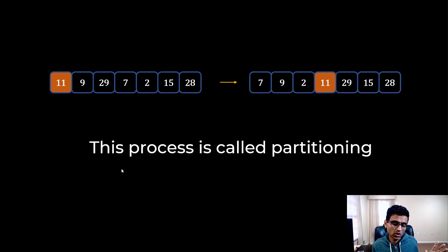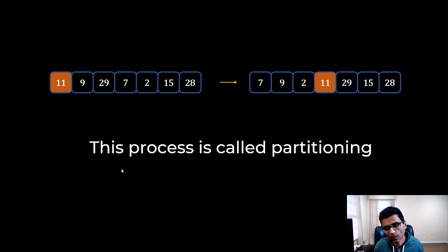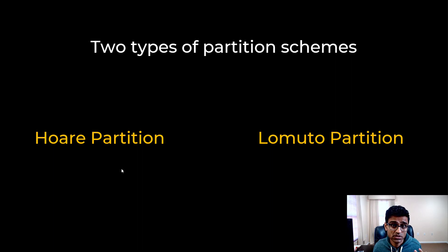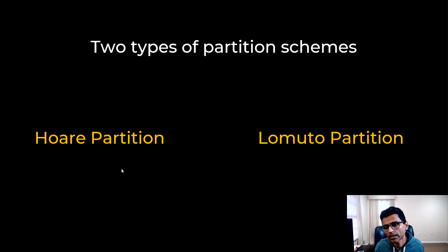Going back to how we can put a pivot in its right position — this process is called partitioning. When you put an element in its right position, you essentially create two partitions: left and right. There are two famous partitioning schemes: Hoare partition and Lomuto partition. Hoare is a British scientist who invented Quicksort, and his original partitioning scheme is more popular, so let's look at that.